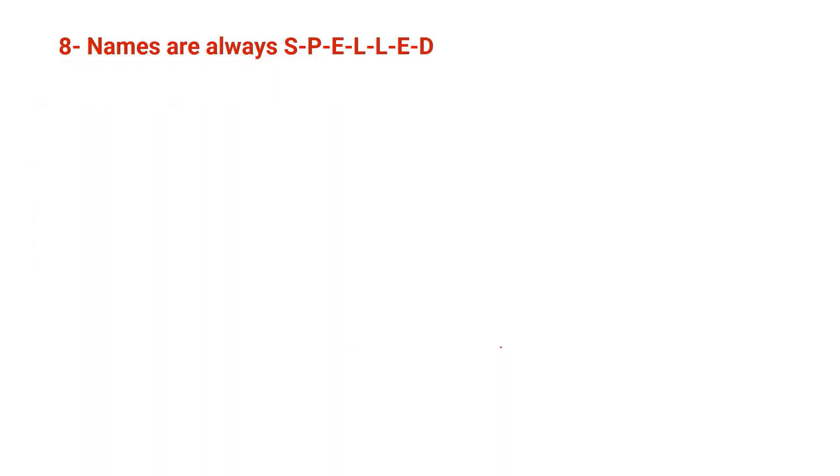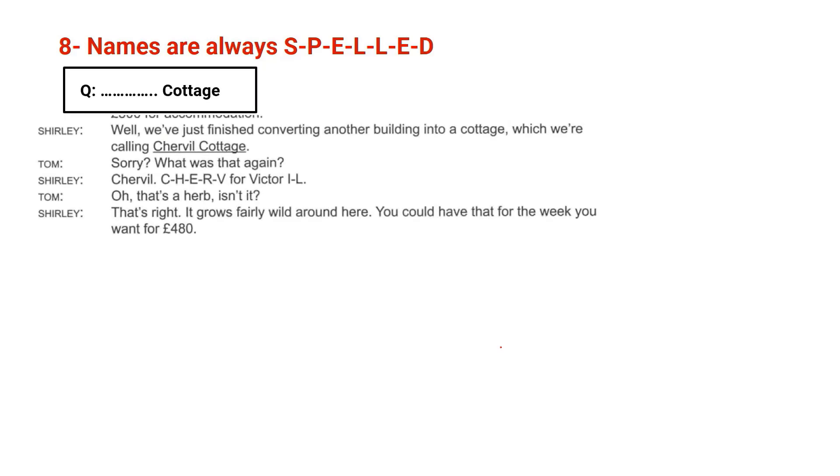Now let's move to the eighth strategy: names are always spelled. In the listening we always hear names of people or organizations or streets or places. You don't have to panic because names are always spelled. So here we have the question and the script. The question here: we have cottage and you need to write the name of the cottage. Well, we have just finished converting another building into a cottage which we are calling Cherville Cottage. Sorry, what was that again? Cherville. C-H-E-R-V for Victor I-L. So again, the name was mentioned very quickly. Don't panic, it will be spelled afterwards. So when the spelling begins, you start writing the word here.